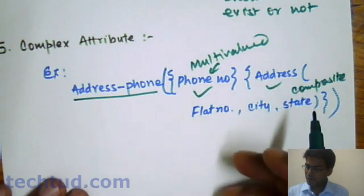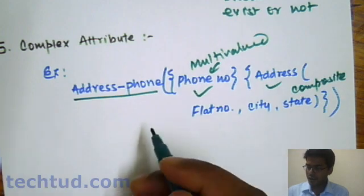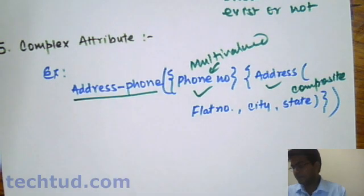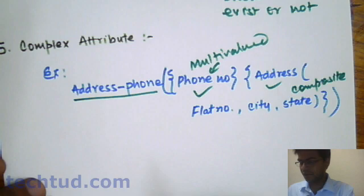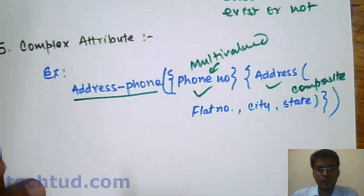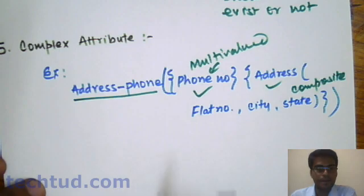By nesting all these attributes, we can form a complex attribute. And this is very rare, or you can say negligible. We don't use it at all in our database applications.